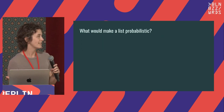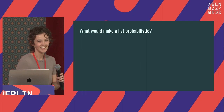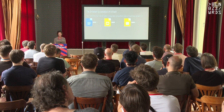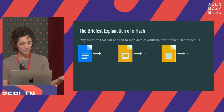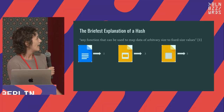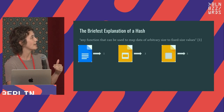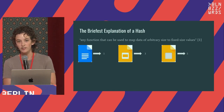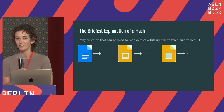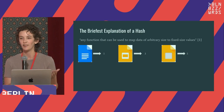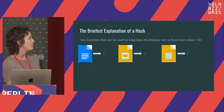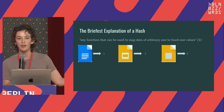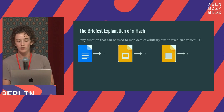So what would make a list probabilistic? A hash. Any function that can be used to map data of arbitrary size to fixed-size values — so this whole document can be represented by the number one. That's a terrible hash function; use more than one number, use a longer number. If you think of SHA-256, that is 256 bits worth. Longer is better — fewer collisions, which is where we'll get to in just a second.